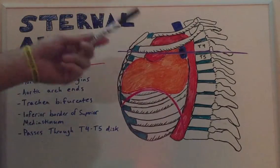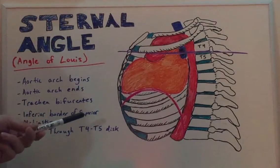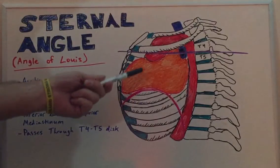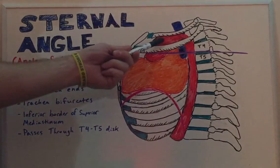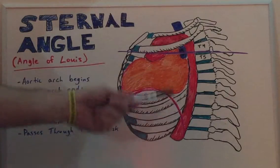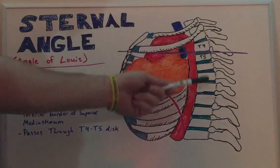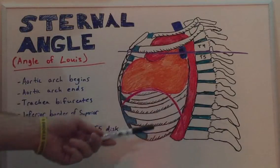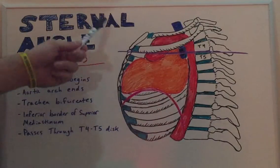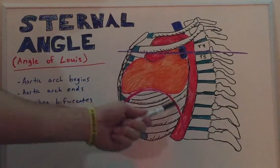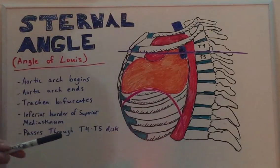From this diagram, we see that we have the heart, the aorta, the trachea, as well as our vertebral column, some ribs, and our diaphragm.